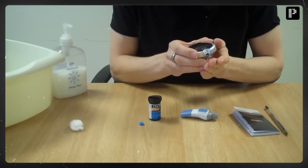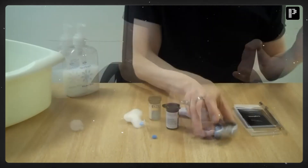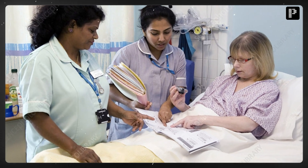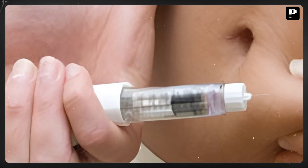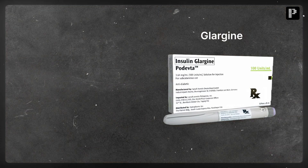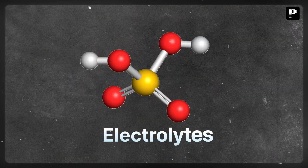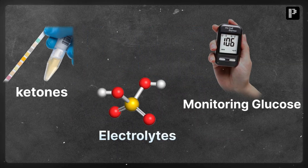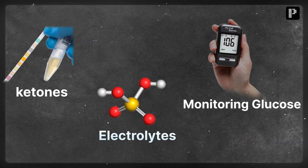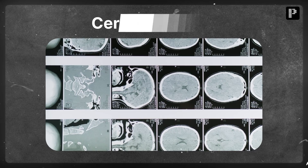Once glucose levels drop below 200 milligrams per deciliter and the patient stabilizes, transition to subcutaneous insulin such as glargine or detemir. Keep monitoring glucose, electrolytes, and ketones.